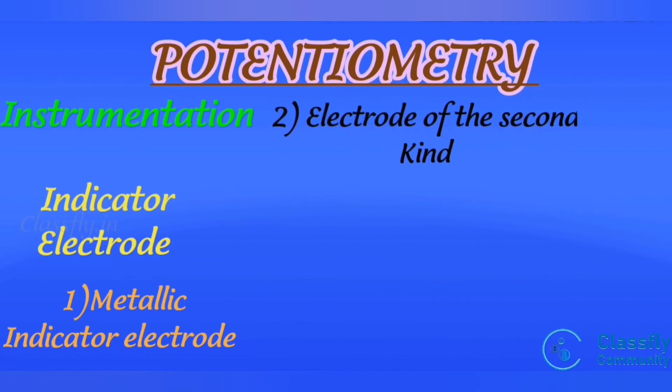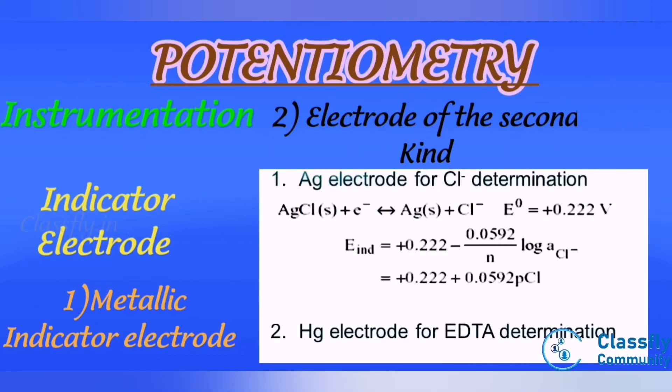Second one is electrode of the second kind. It responds to anion by forming precipitate or a stable complex, for example silver electrode for chlorine determination and mercury electrode for EDTA determination.